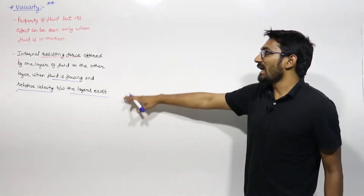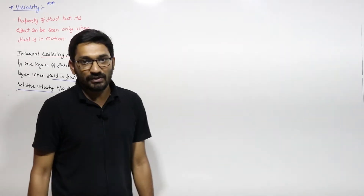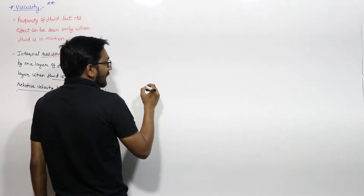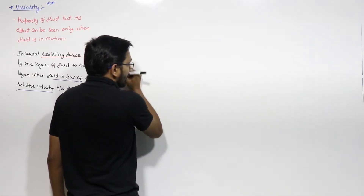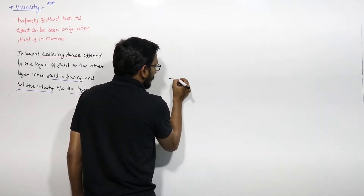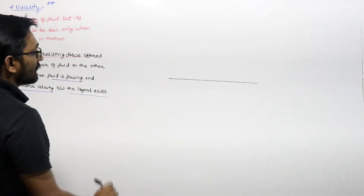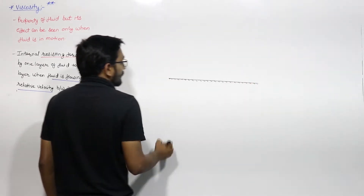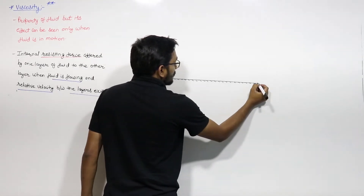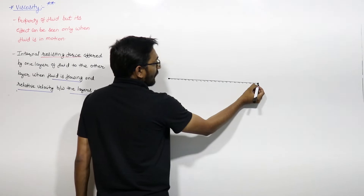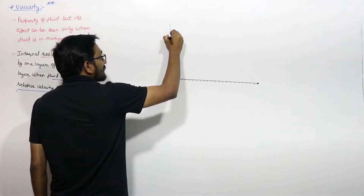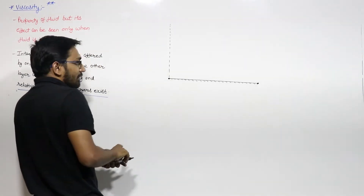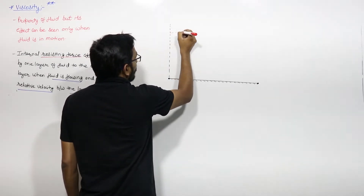Let us discuss why this resisting force comes into picture, with the help of a diagram. Suppose this is a solid surface over which fluid is flowing, and this solid surface is at rest — it is a fixed solid surface. This is the leading edge and this is the trailing edge. Over this solid surface, the fluid is flowing in layers.